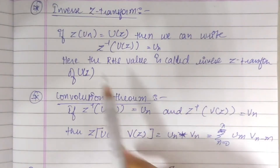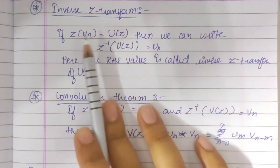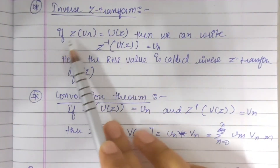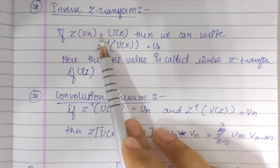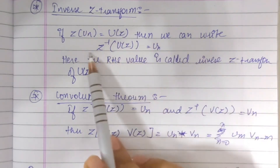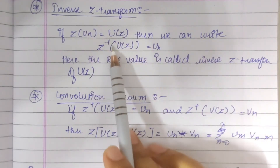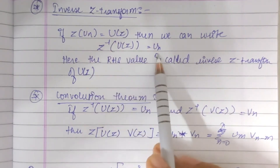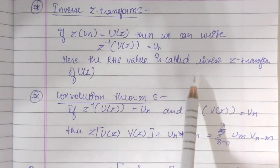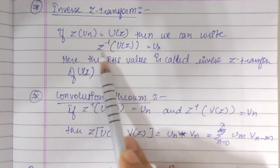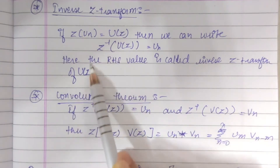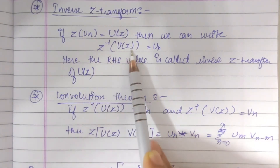Hey guys, so in today's lecture we will be seeing the inverse Z-transform. If Z of u(n) is equal to U(z), then we can write the inverse Z of U(z) is equal to u(n). The right-hand side value is called the inverse Z-transform of U(z).